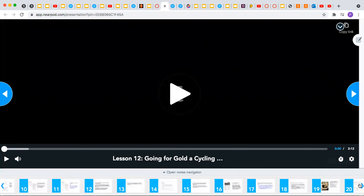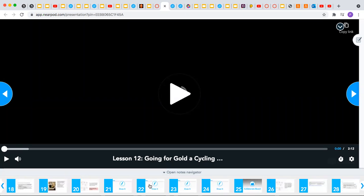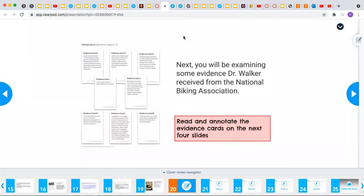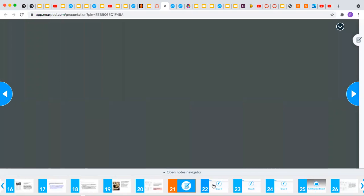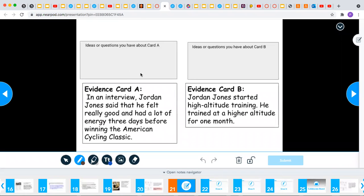And you will be making sure that you evaluate evidence. So you will have various evidence cards to sort through as well as annotate. So if you look here, you will be annotating this, you can highlight it, but you also write down your ideas or questions for each card. So there are eight cards, two on each slide.